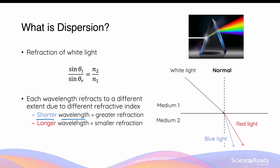Each wavelength refracts to a different extent. Specifically, shorter wavelength or higher frequency visible light undergoes greater refraction, so its angle of refraction will be smaller. Longer wavelengths such as red light undergo a smaller extent of refraction. In the diagram, both blue and red light undergo refraction, but blue light is bent more towards the normal, resulting in a smaller angle of refraction. Red light is also bent towards the normal but not as much, so its angle of refraction is larger.